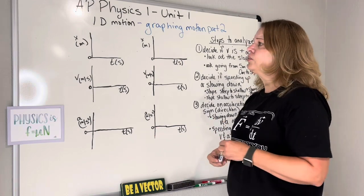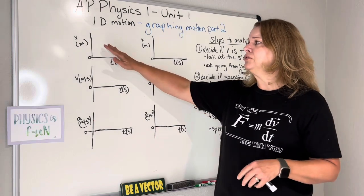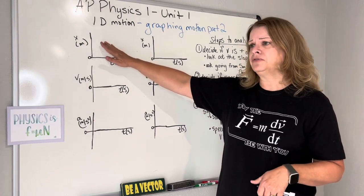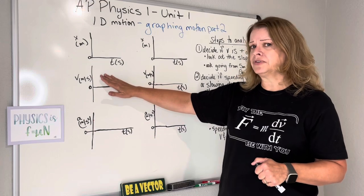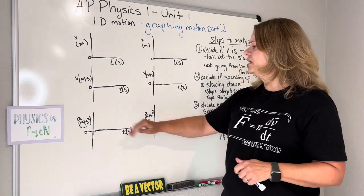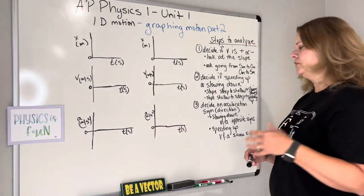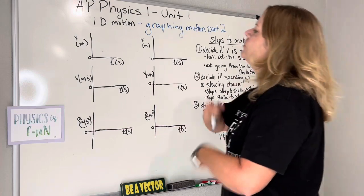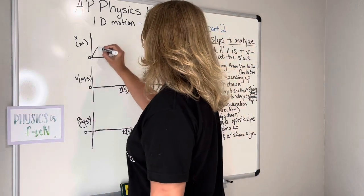I'm already going to assume that you understand the slope on a position-time graph is velocity, and the slope on a velocity-time graph is acceleration. And then we have our acceleration graphs and the slopes of those. So we're going to go ahead and start with a graph that looks like this.